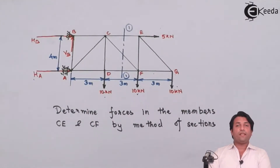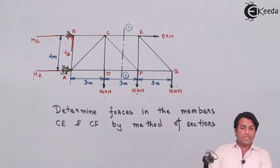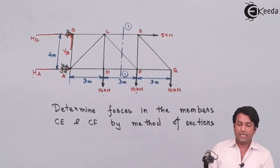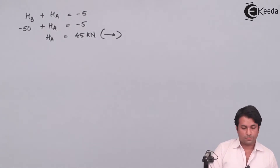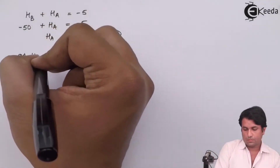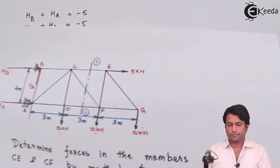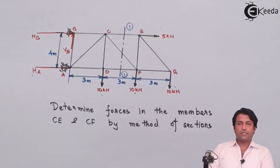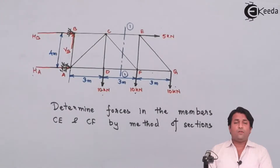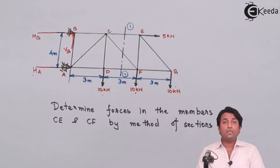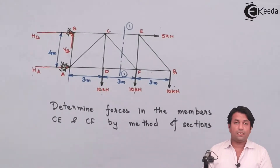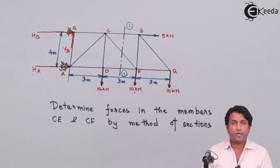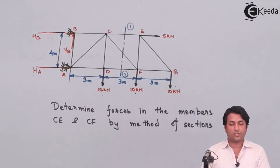The next step is to find out the forces in the selected members, which are CE and CF. Looking at this truss, the right-hand side seems easier for calculations because it is the smaller part. So I will take the right-hand side part of the truss and redraw that structure.